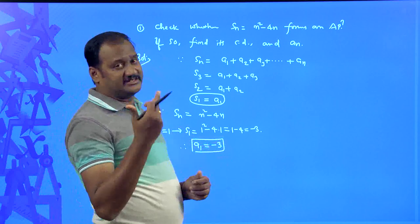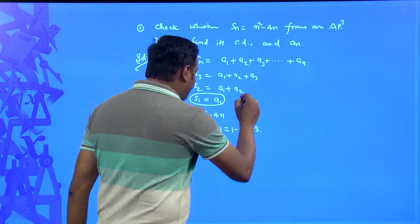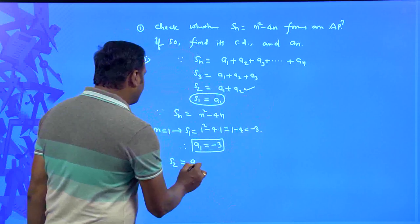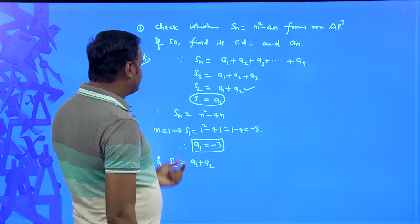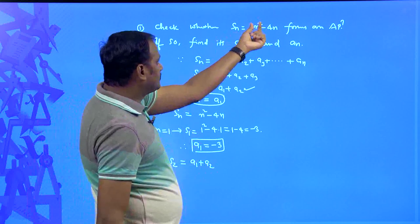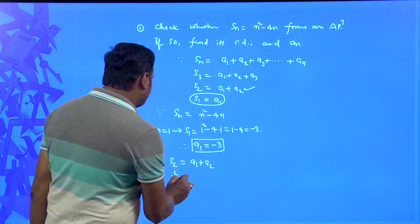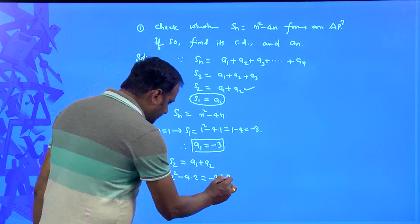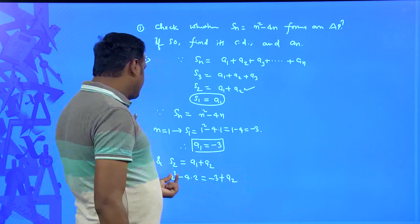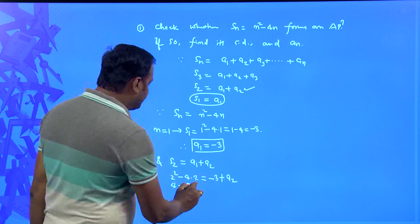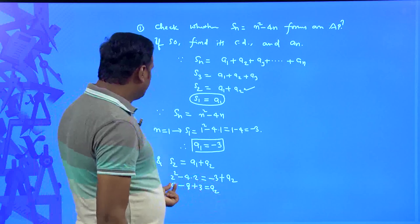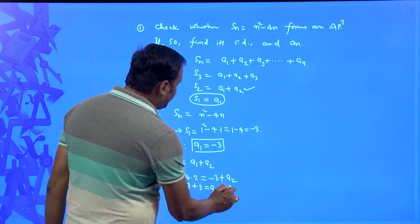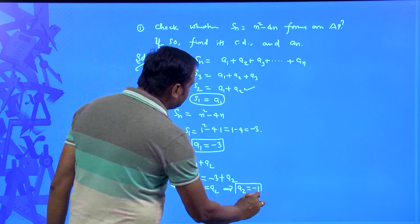Now I need the second term. S2 equals a1 plus a2. Substituting n equals 2: 2 squared minus 4 times 2 equals a1 plus a2. So 4 minus 8 equals negative 3 plus a2. Therefore a2 equals negative 4 plus 3 equals negative 1. The second term a2 equals negative 1.